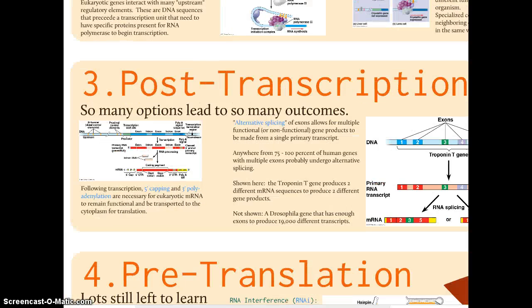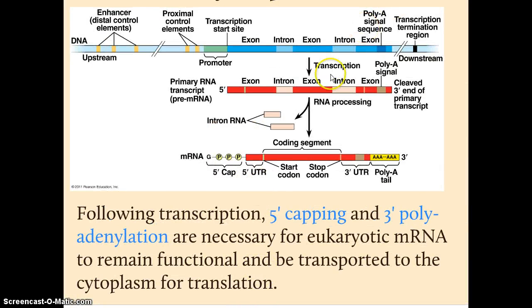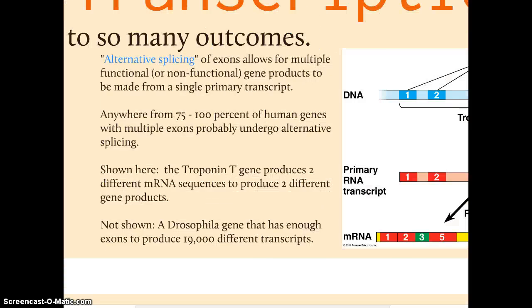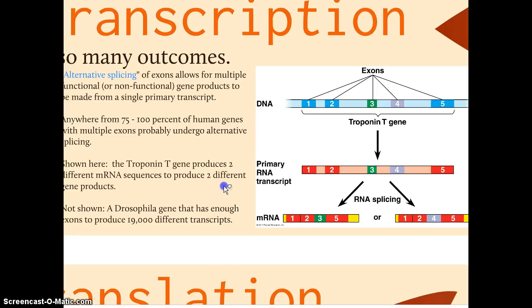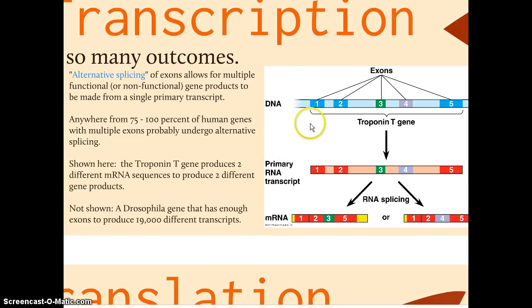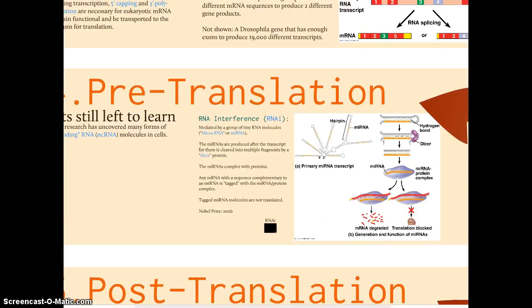We're familiar with all sorts of post-transcriptional controls. We studied the addition of the 5' cap and the poly-A tail after transcription occurs — that's part of the editing of RNA. There's also alternative splicing. When exons are spliced together, different combinations of exons can be put together in different ways to create all sorts of mature messenger RNAs that can lead to a number of different proteins — so again, another way to control the expression of genes.